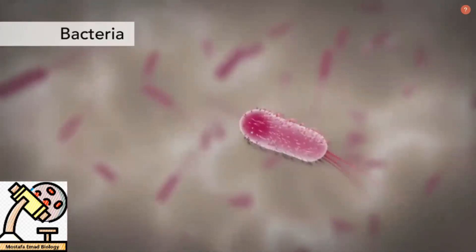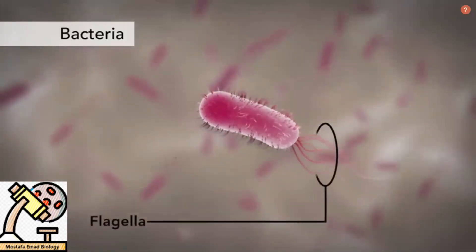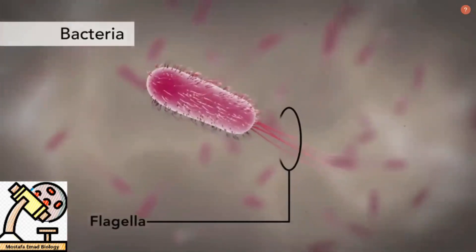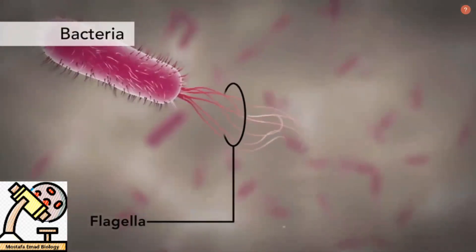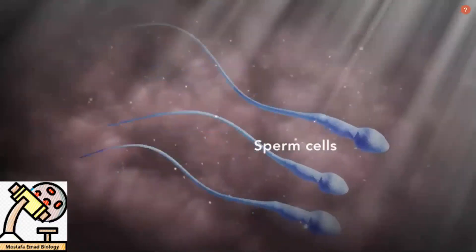Another unique feature in some cells is flagella. Some bacteria have flagella. A flagellum is like a little tail that can help a cell move or propel itself. The only human cell that has a flagellum is a sperm cell.